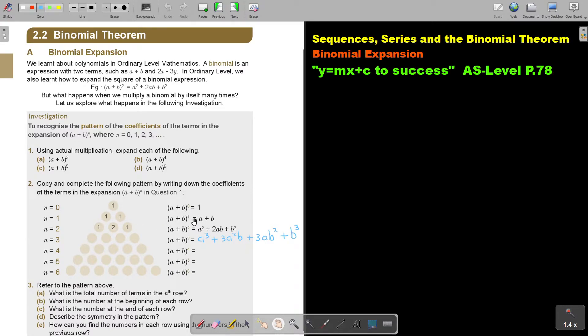But what happens when we multiply a binomial by itself many times? Let us explore what happens in the following investigation. You can look at this investigation and work it out. I just start with it and you will find the answer in the teacher's guide. So if N is 0, it's just 1. And if it is 1, I am looking at the coefficients.